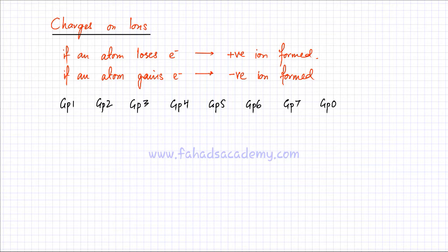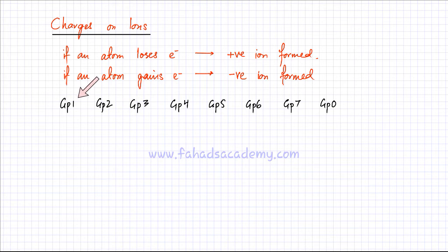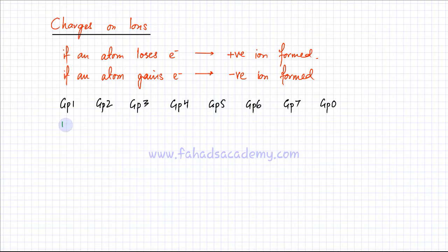You're already familiar with which elements lose how many electrons. Starting with group one — group one elements have one outer shell electron, one valence electron, and they always lose one electron. So group one elements generally have a charge of plus one.